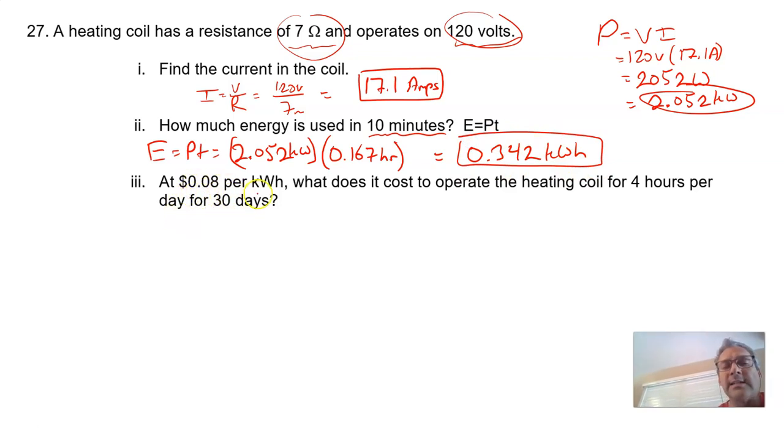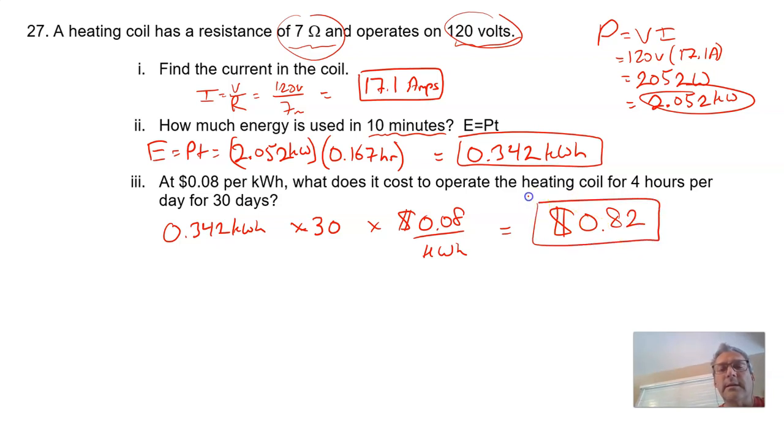At 8 cents per kilowatt hour, what does it cost to operate the heating coil for 4 hours per day for 30 days? We're going to take that number, 0.342 kilowatt hours, multiply that by 30 days, and then multiply it by our conversion cost of 8 cents per kilowatt hour. Times 30 times 0.08 comes out to be about 82 cents. Did we do that right? No, we didn't quite do that right. That would be 10 minutes a day for 30 days.